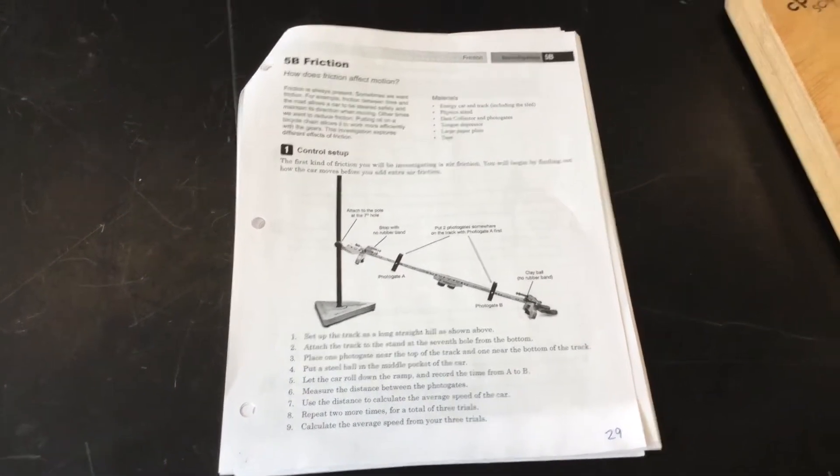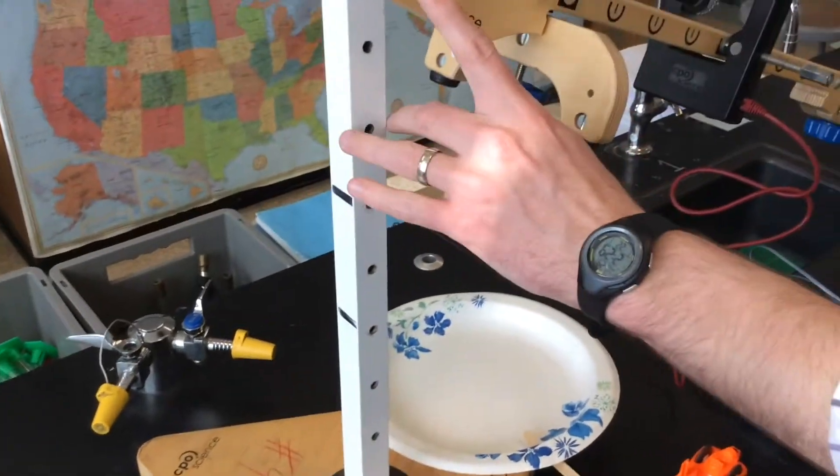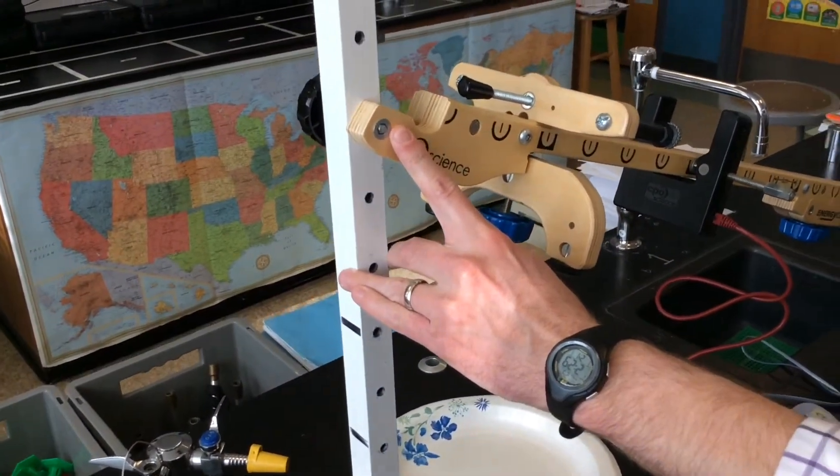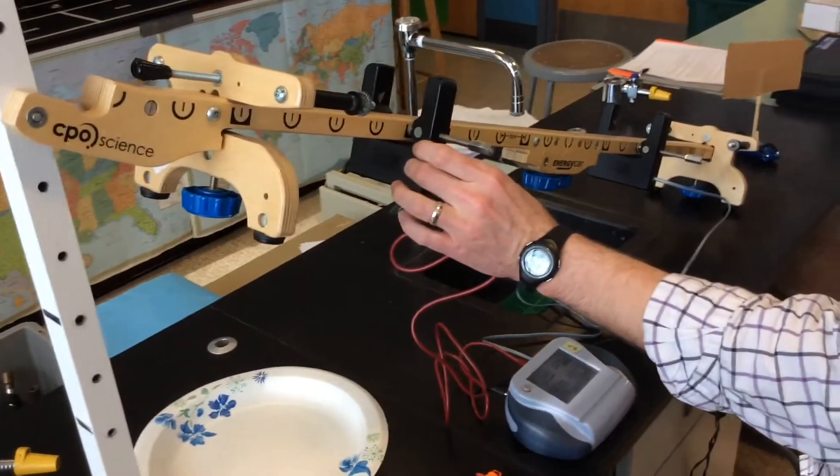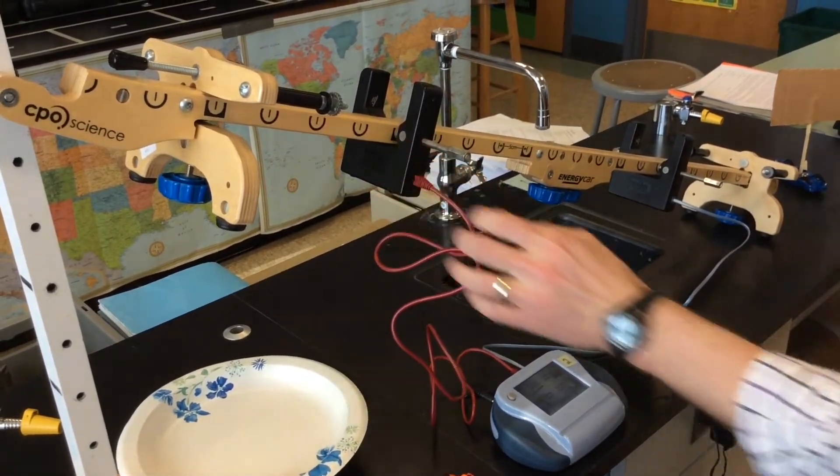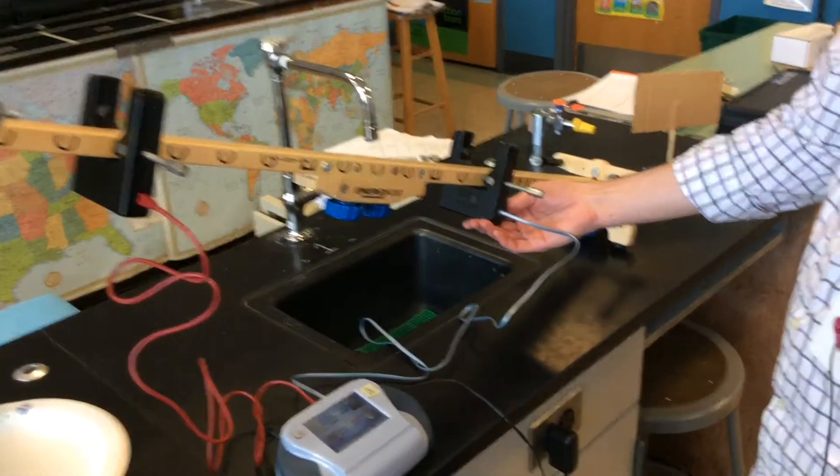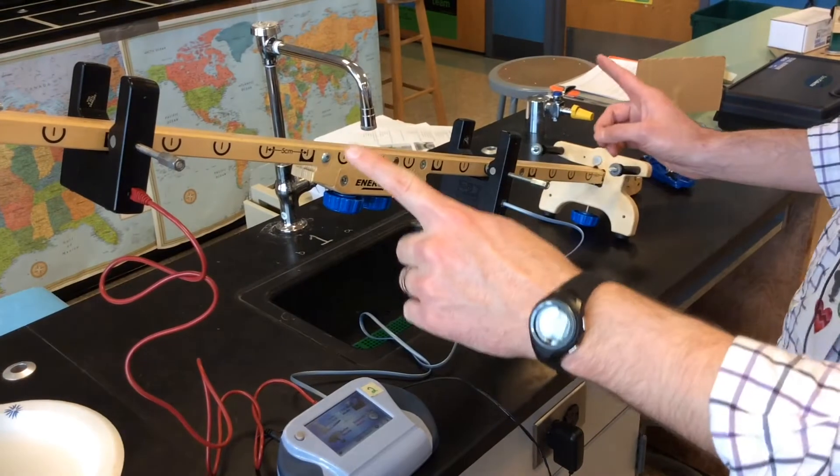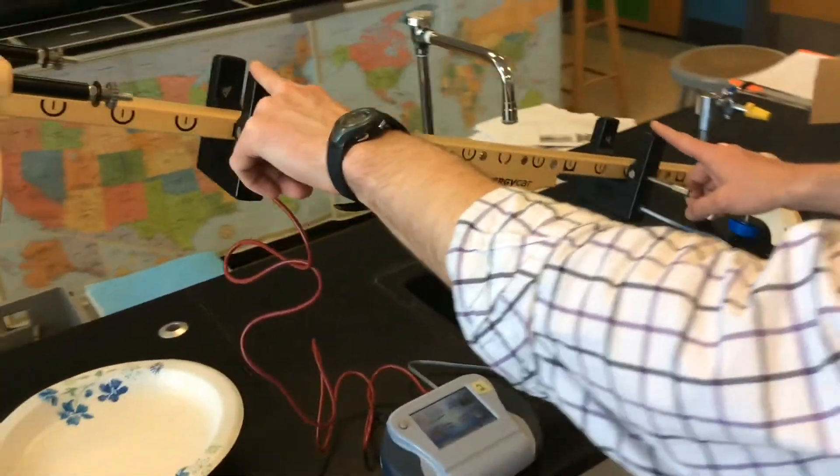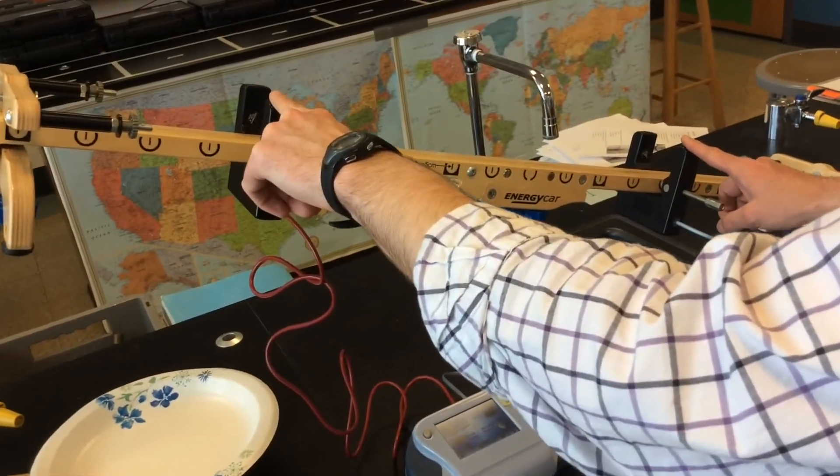And the setup for this lab is to have the ramp at hole 7. The first photo gate is at the 20 centimeter mark, and the second photo gate, the B photo gate, is at the 70 centimeter mark. The important number here is that they are 50 centimeters apart, and that's going to be important for our calculations later.